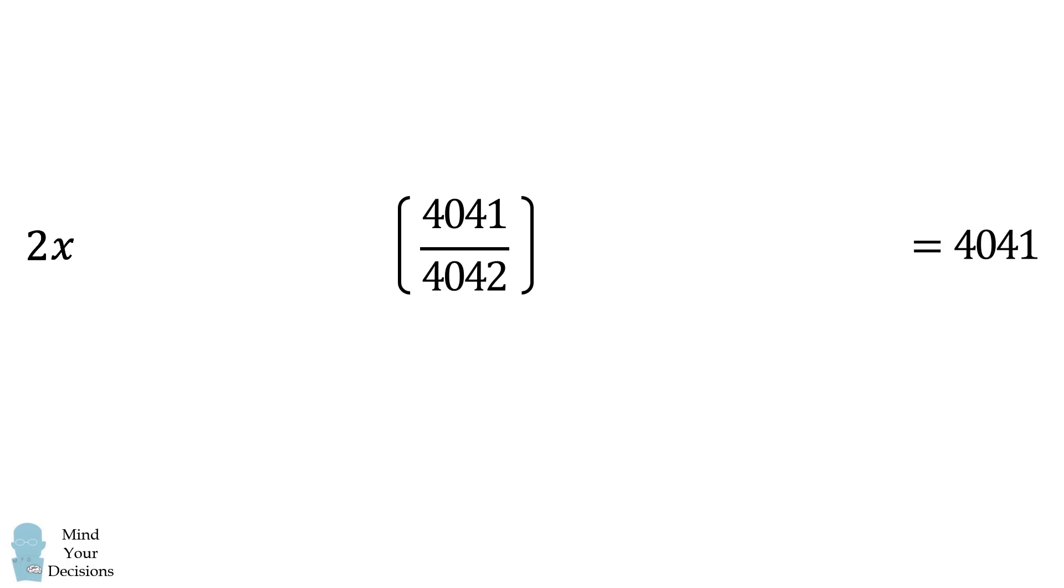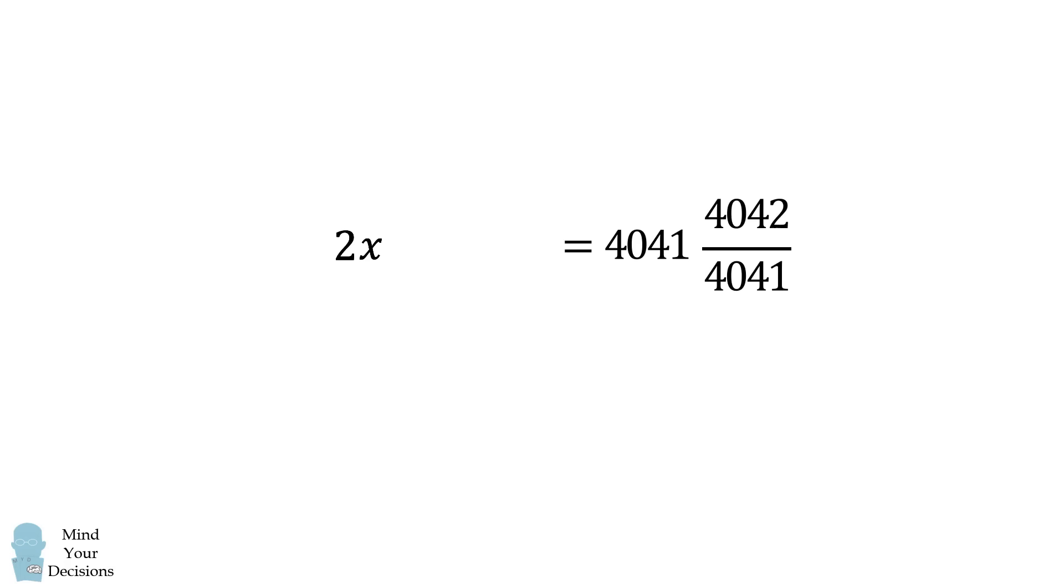We now have a simple equation. We multiply both sides by the reciprocal of 4041 over 4042. And then we multiply both sides of the equation by 1 over 2.